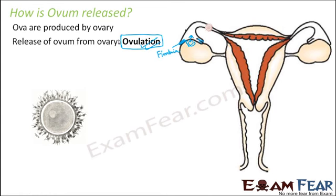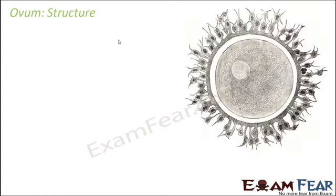This is how the egg or ovum looks like. Let us understand the structure of the ovum in a little more detail. So let us look at the detailed structure of an egg cell. Egg and ovum mean the same thing. They basically have the following important layers.